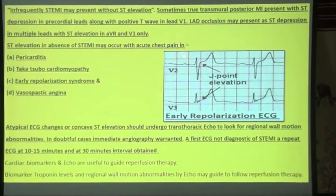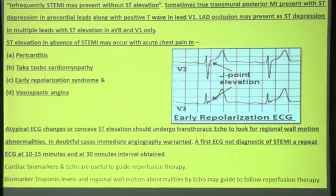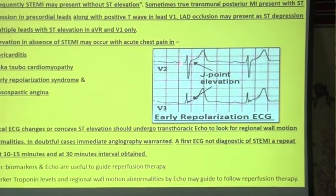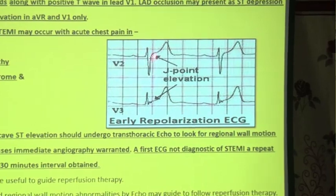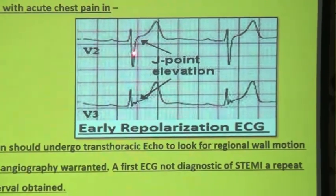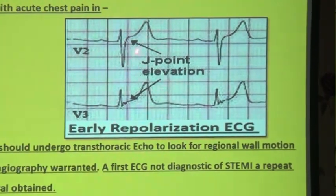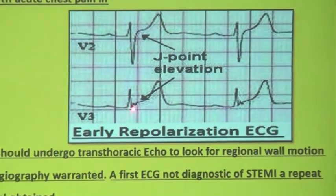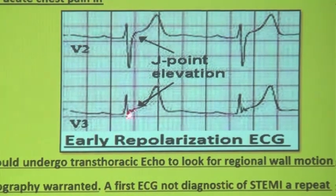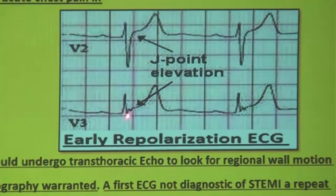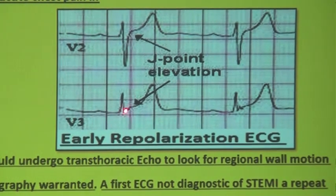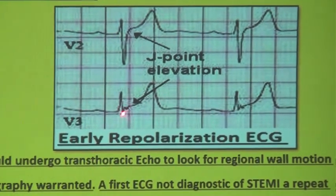Early repolarization syndrome is visible on the ECG where the ST segment has gone upward relative to the baseline. The ST is 1 mm above the baseline but this is not ischemia — this is early repolarization. Do not confuse it with ischemia.